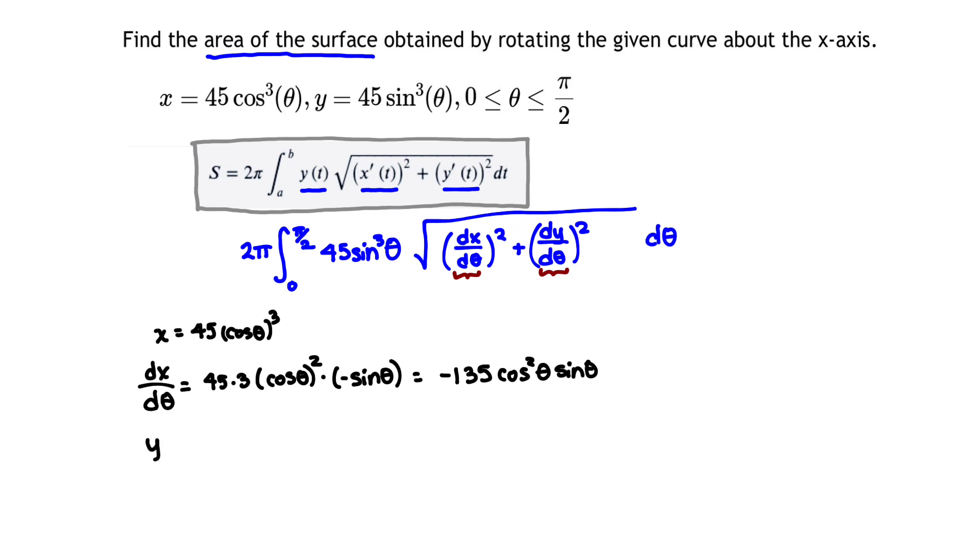That tells me dx/dθ is simply -135 cos²θ sin θ. Now, let's take a look at y. y is a very similar function. It's 45(sin θ)³, and when I take the derivative of y with respect to theta using the chain rule, that's going to give me 45 times 3 times sine theta squared times the derivative of sine theta, which is cosine theta.